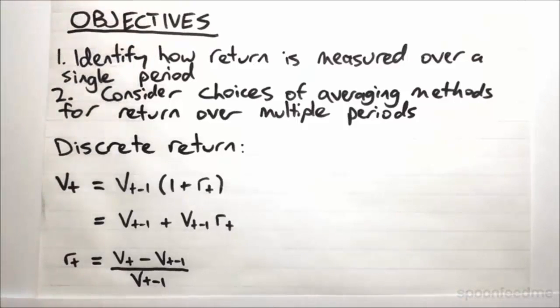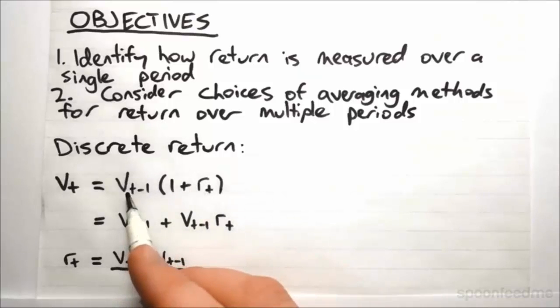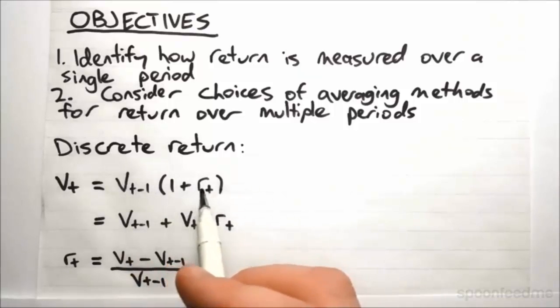What this is basically equivalent to is saying that we have our value at our previous time period, and then the value of our asset actually stays constant throughout the time period. And then right at the end we instantly receive interest proportional to our previous amount. So right at the end we receive this r% interest.